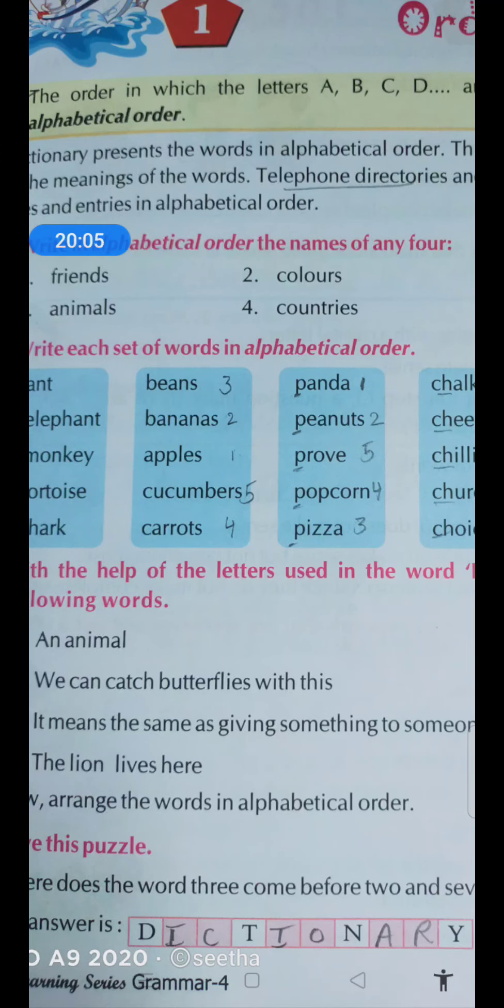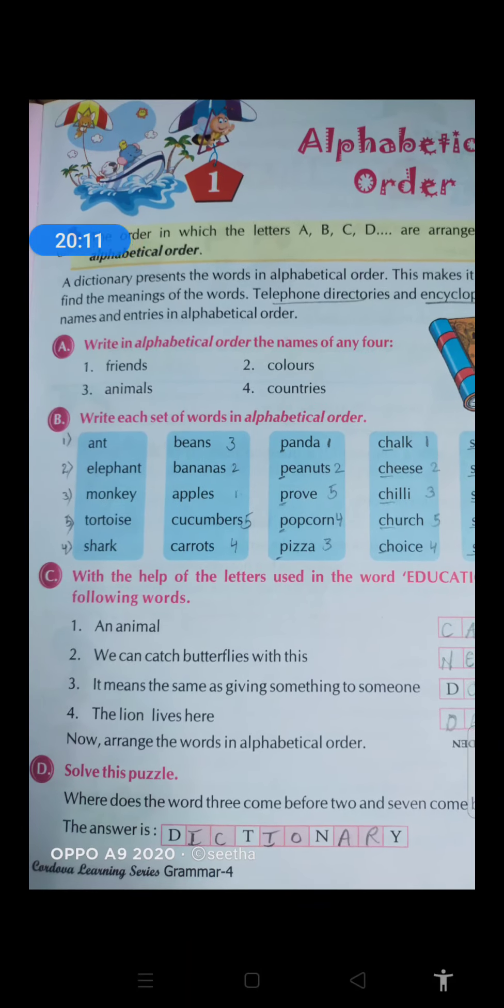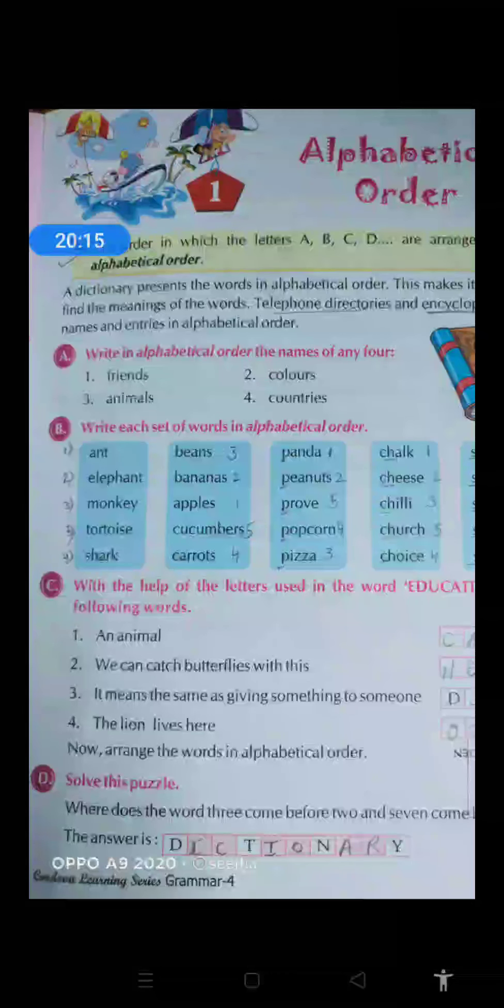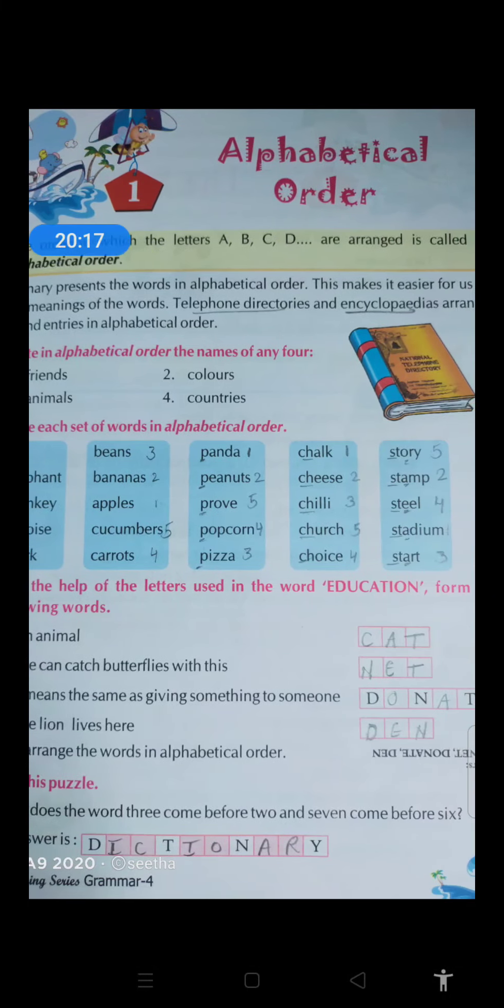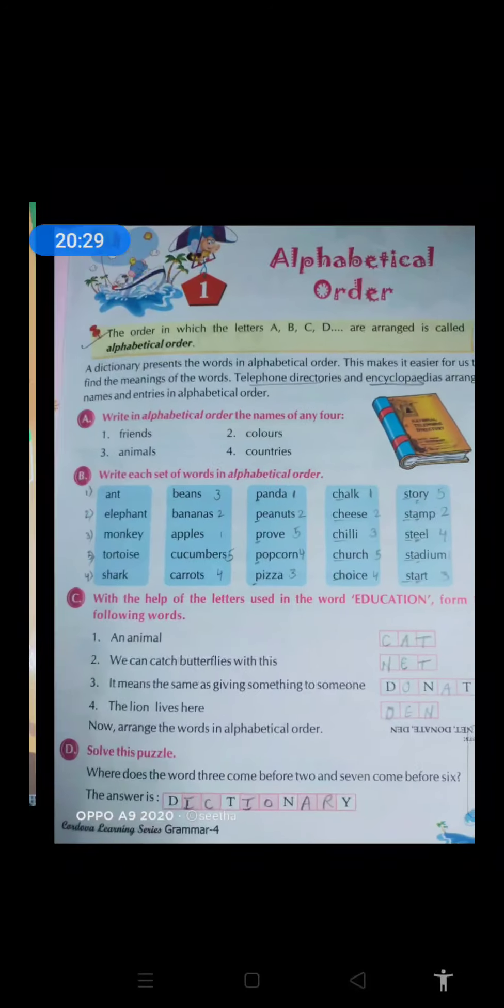Now the lion lives here. Yes, you know the place where lion lives - den. D-E-N, yes, present in education. Now arrange the words in alphabetical order. You have to arrange these in alphabetical order: C-D. Cat first, then after that comes D-E-N, then donate, then net. Okay.